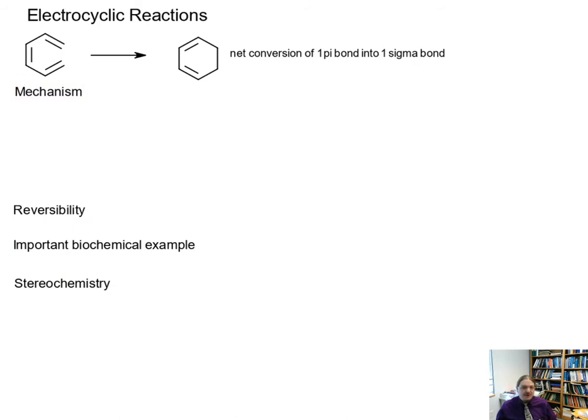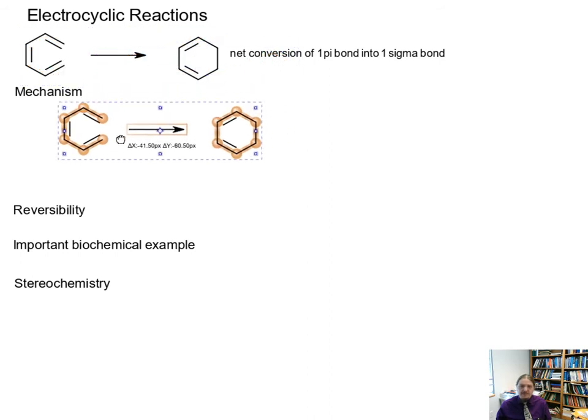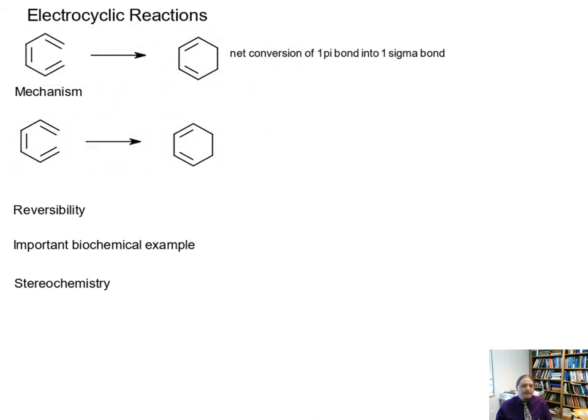Like most pericyclic reactions, this mechanism is actually really simple. Like most pericyclic mechanisms, you can start at any of the pi bonds and you can go in any direction, clockwise or counterclockwise. I'll draw the counterclockwise version.